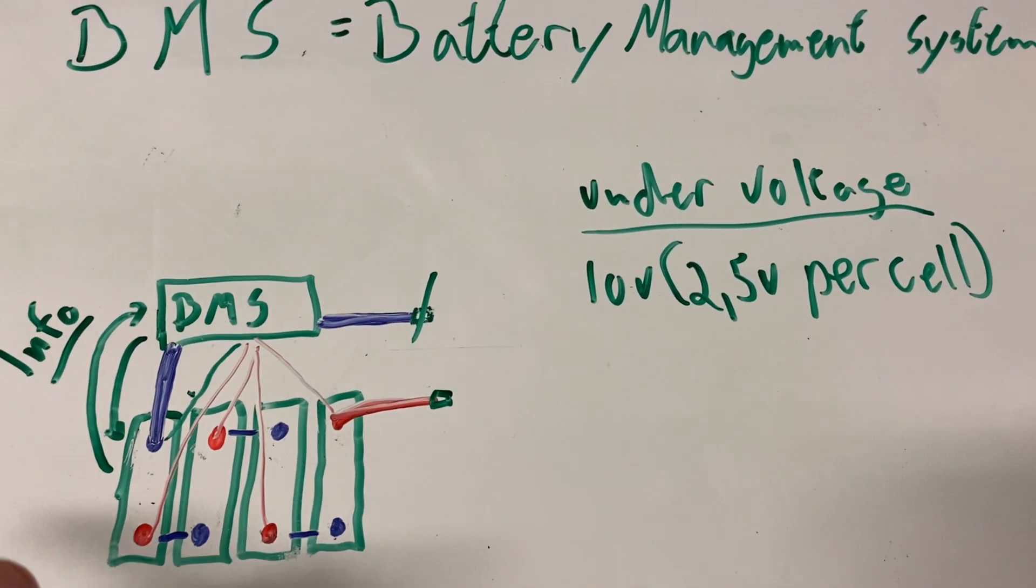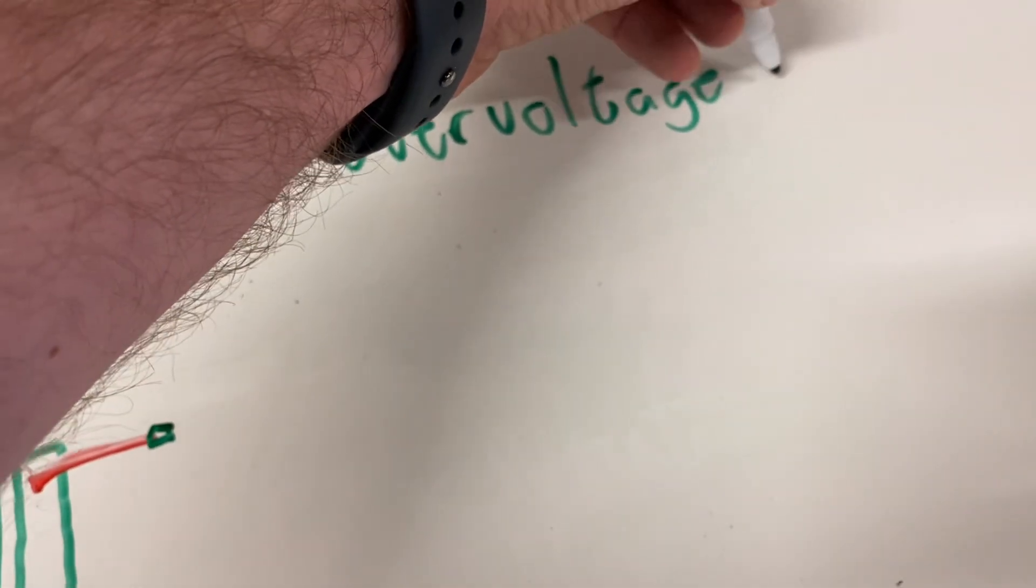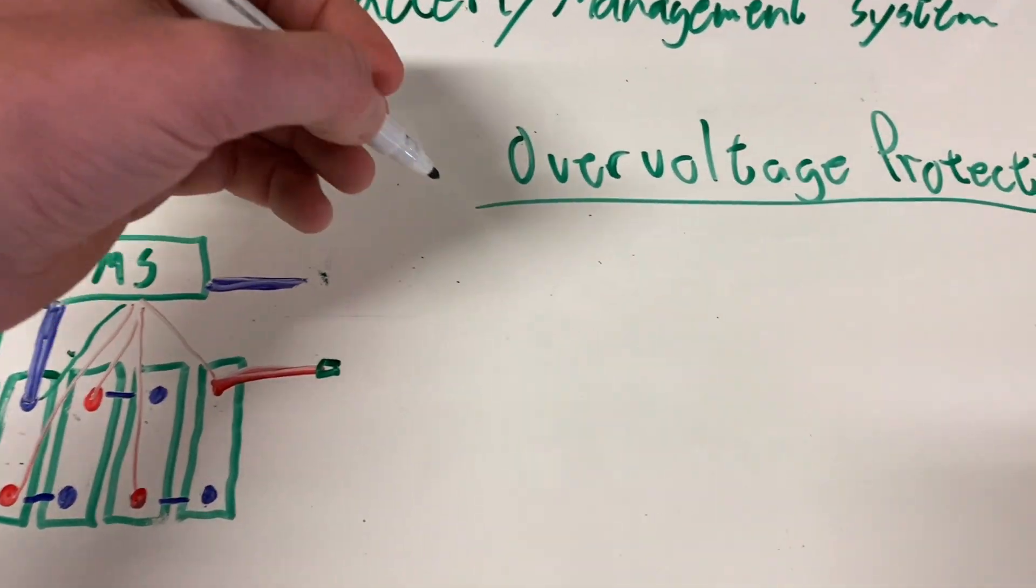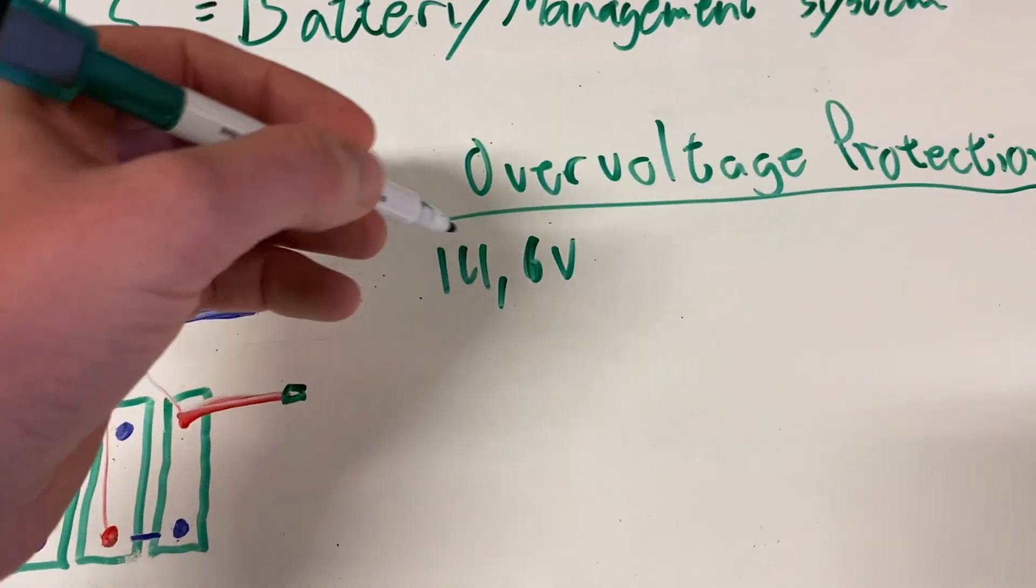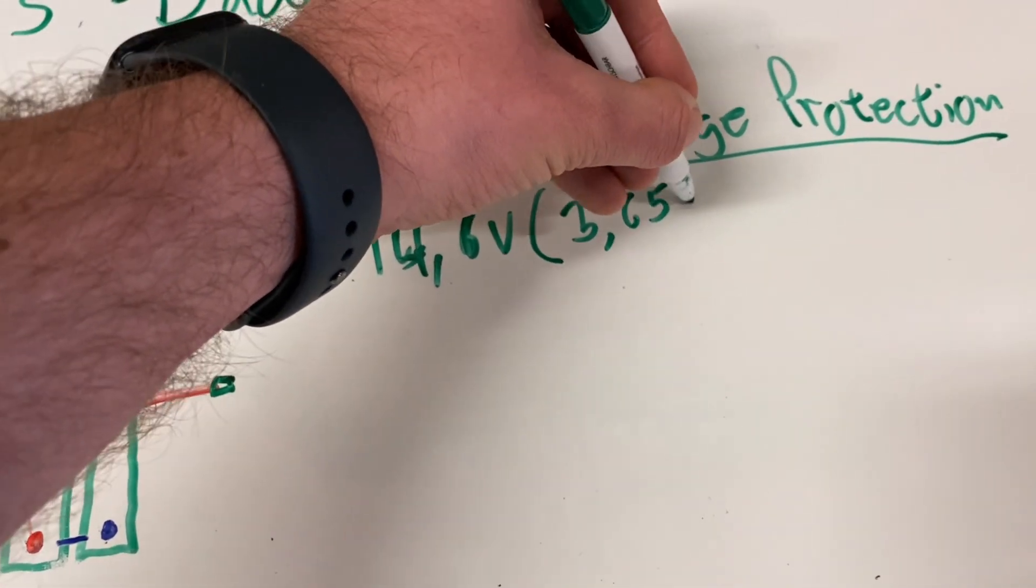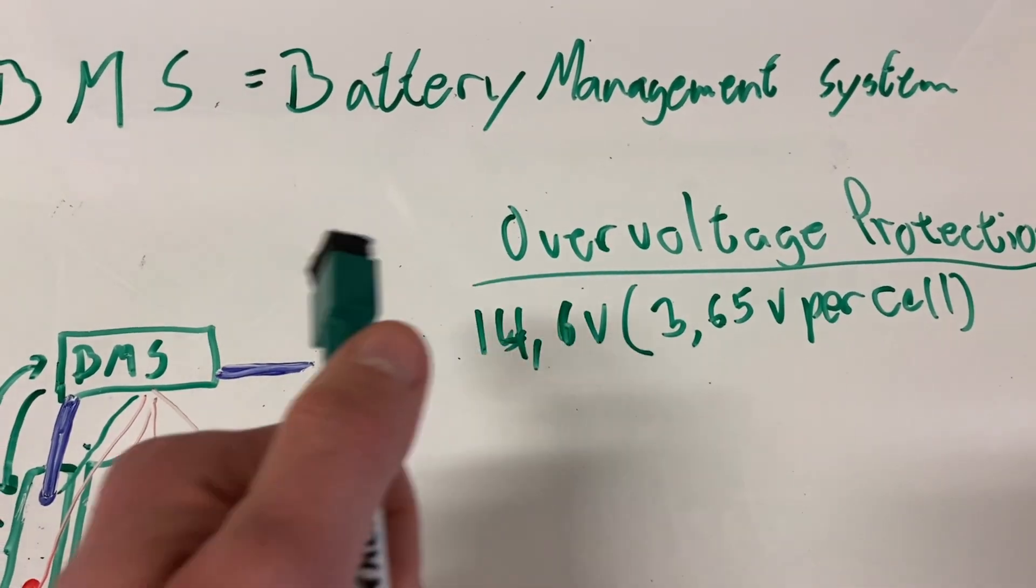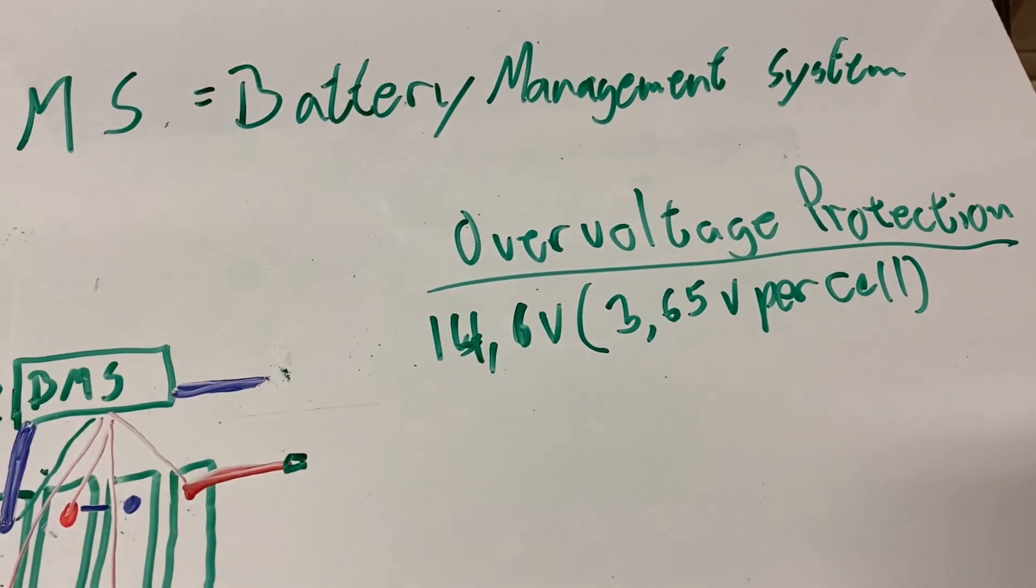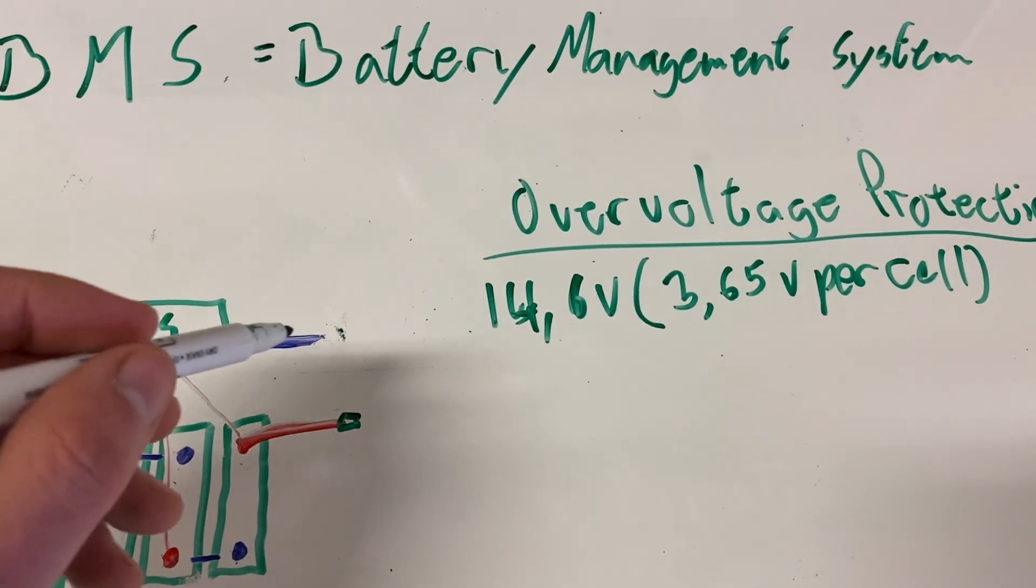Over voltage protection kicks in when the battery is in a higher state of charge, about 14.6 volts in the lithium iron phosphate battery, 3.65 volts per cell. It could be set lower in the BMS, but most BMSs and chargers are set to 14.6. So when it reaches 14.6, the BMS cuts charging.